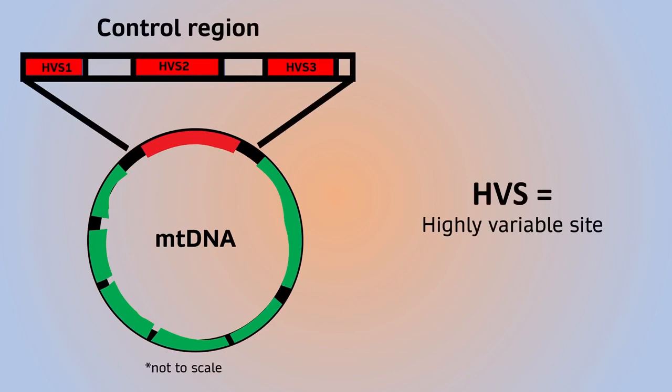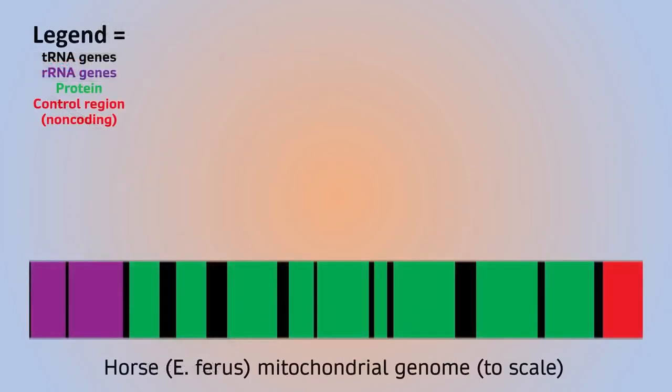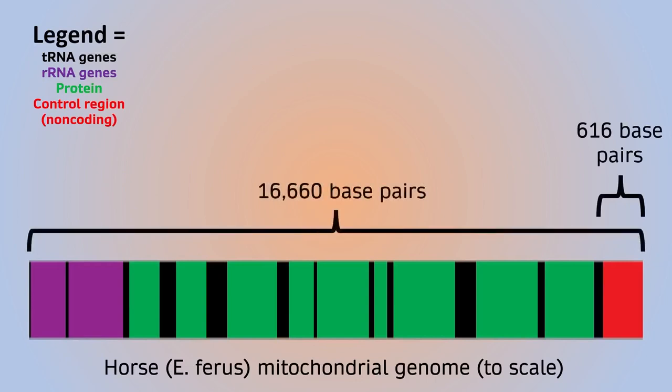If we lay the genome out, you can see just how little of the genome is being considered by only sequencing the control region. It encompasses just 616 base pairs out of the almost 16,000 plus present in the entire genome.